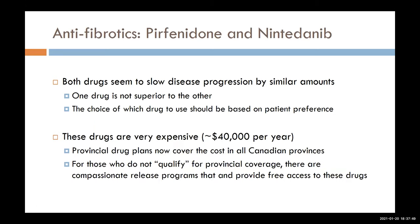It's important to remember that these drugs are very expensive — about $40,000 per year. But the provincial formulary covers the cost in all Canadian provinces. And if you don't qualify, in IPF specifically those who don't qualify for provincial coverage can get compassionate release from the drug companies, who will give patients the drug for free. That only applies in IPF, not other diseases where we might consider using these drugs.